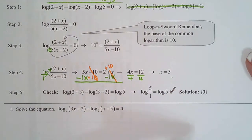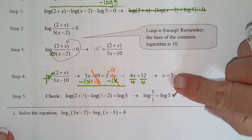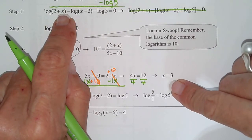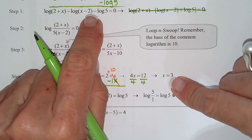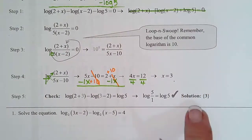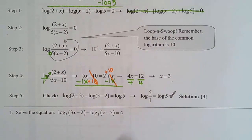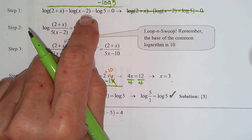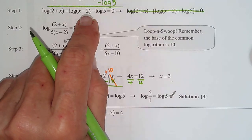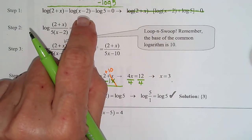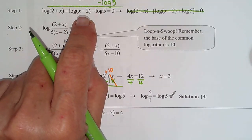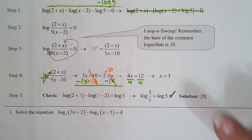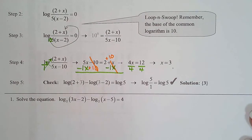Remember, you can't be guaranteed that x equals 3 is a solution until you plug it into the arguments. 2 plus 3 — positive? Yes. 3 minus 2 — positive? Yes. So 3 is a valid solution. What if the answer were 2? 2 plus 2 is positive, but 2 minus 2 equals 0 — we don't know how to take the log of 0, so that would not be a valid solution. Since x equals 3 worked, we put it in a solution set to show the reader it is a valid solution.